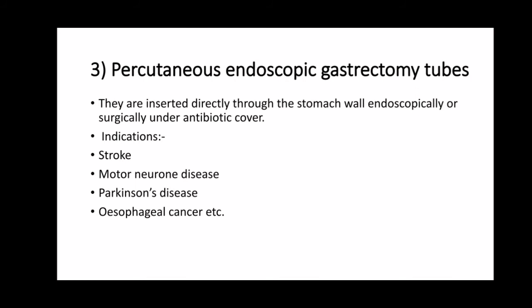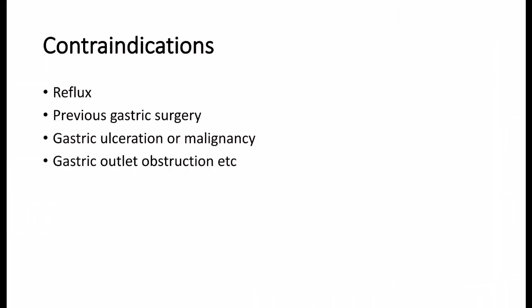Percutaneous endoscopic gastrostomy tubes are inserted directly through the stomach wall endoscopically or surgically under antibiotic cover. Indications: stroke, motor neurone disease, Parkinson's disease, esophageal cancer. Contraindications: gastroesophageal reflux, previous gastric surgery, gastric ulceration or malignancy, gastric outlet obstruction, etc.